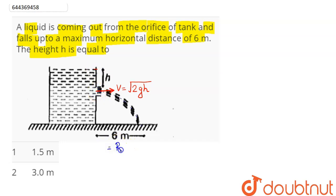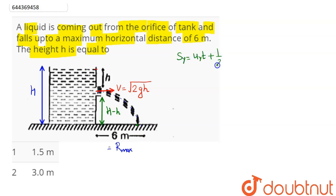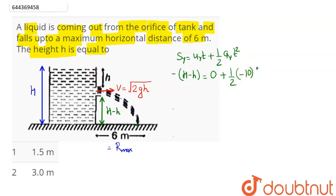This is the maximum range of this projectile. If the total height of the water tank is capital H, then this height from the orifice to the ground is H minus h. The time taken to land on the surface can be found using s = ut + ½at². Along the y-direction, displacement is minus (H − h), initial velocity along y is 0, and acceleration is minus 10 m/s².